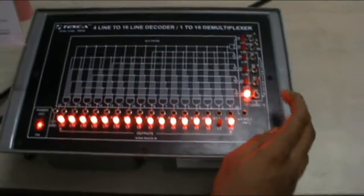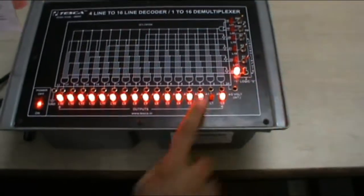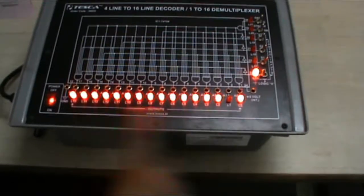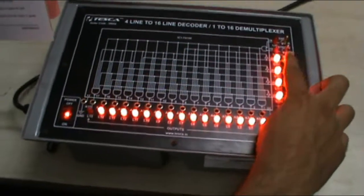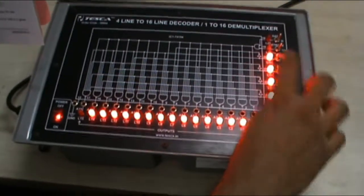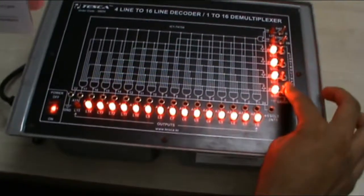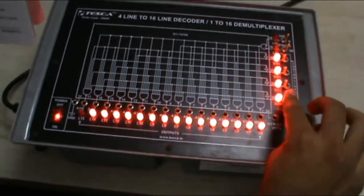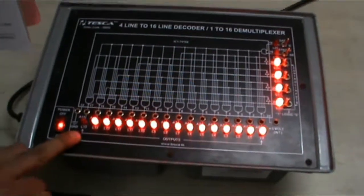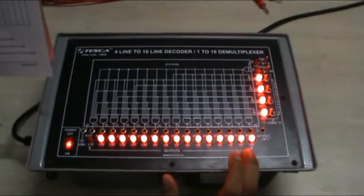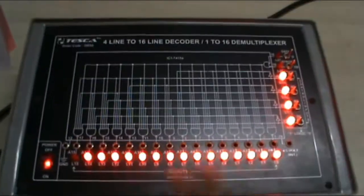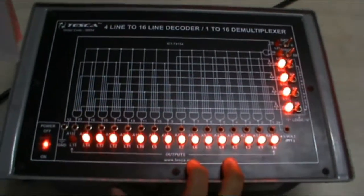Similarly if I switch on all 4 inputs, that is 15 in binary 1,1,1,1, then my L15 is off and rest all are glowing. This is the working of 1 to 16 demultiplexer.